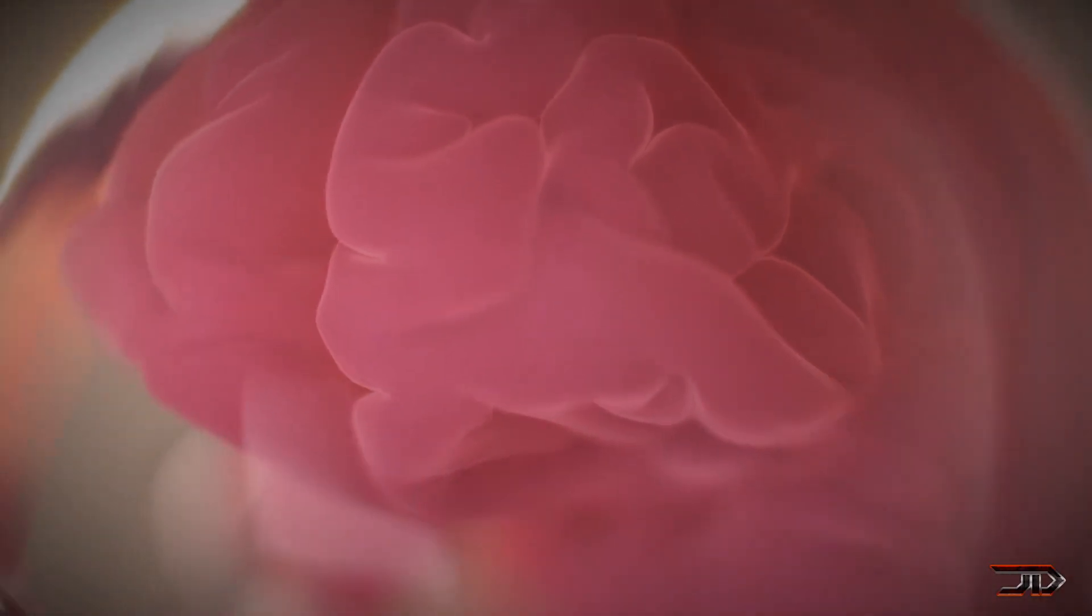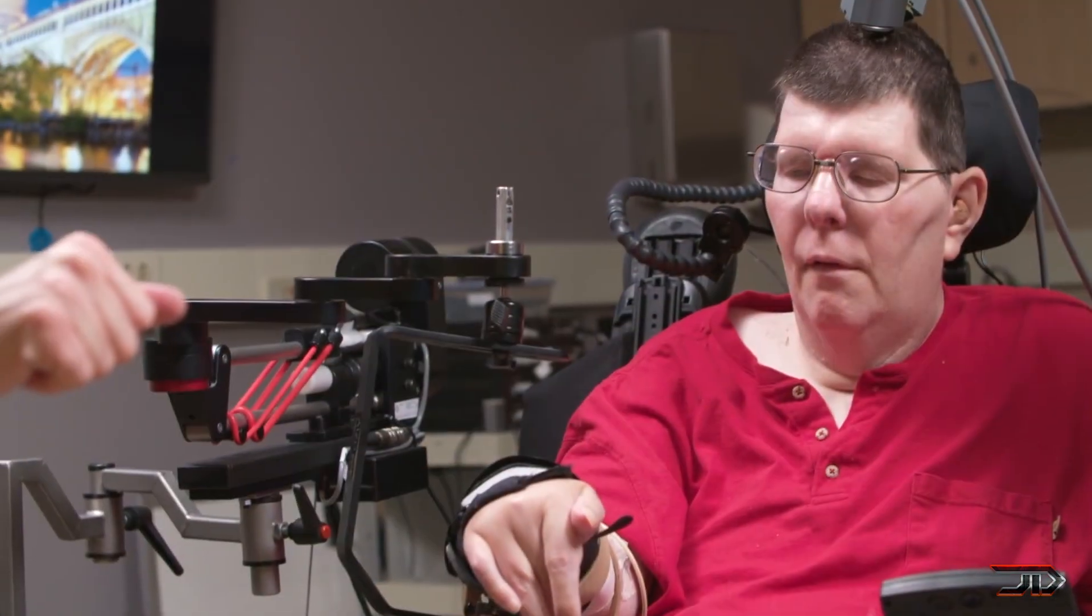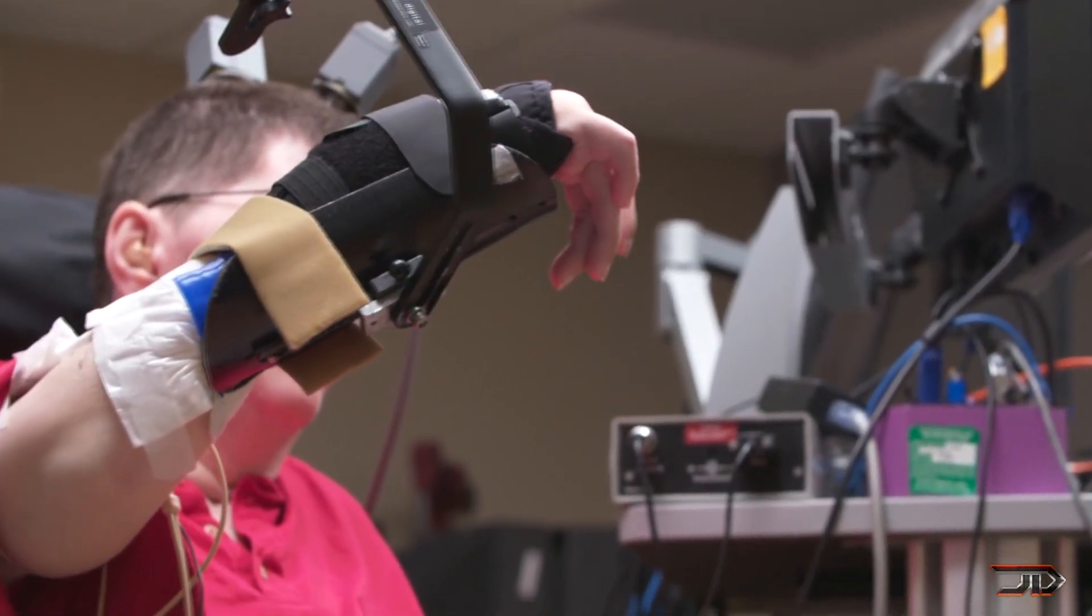Now, in the near term, Musk wants to implant chips into quadriplegics so that they can control a computer mouse or a device by thinking. And obviously, this could be a really good thing for people that actually need this type of technology.